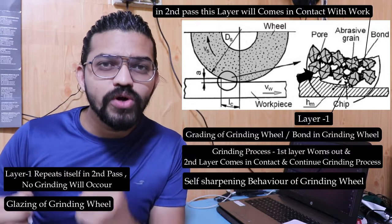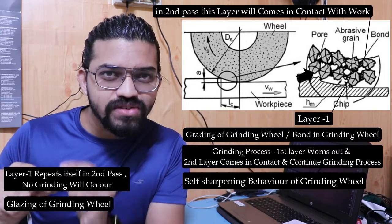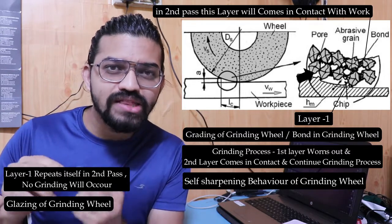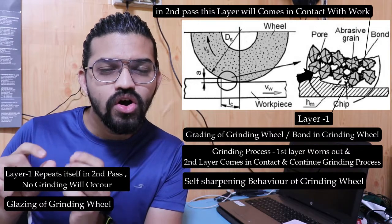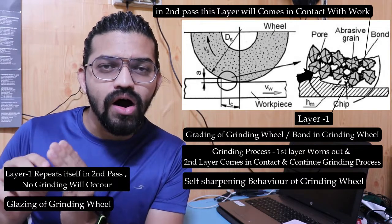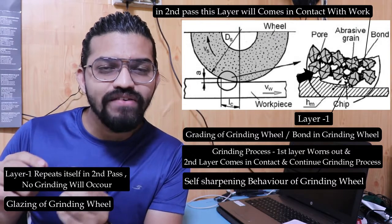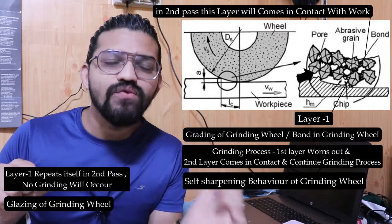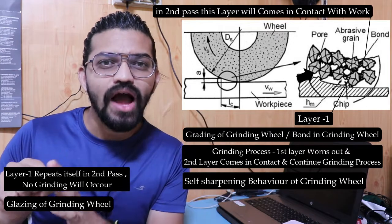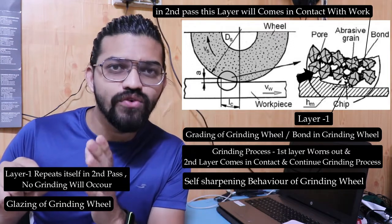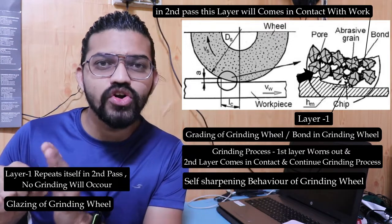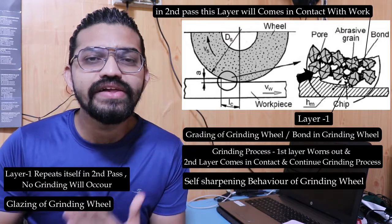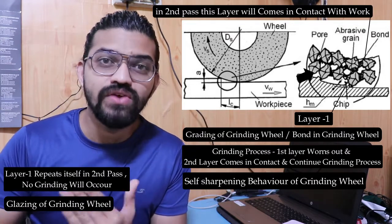This scenario — where abrasives have a strong bond so the first layer doesn't wear out and the second layer doesn't come in contact with the workpiece — is known as glazing of the grinding wheel.